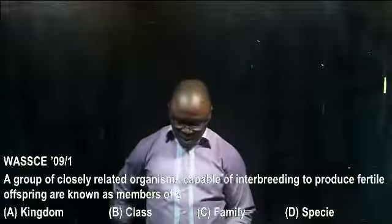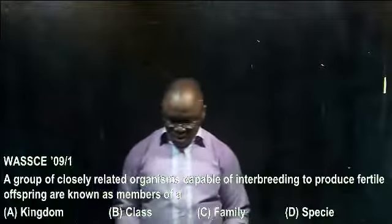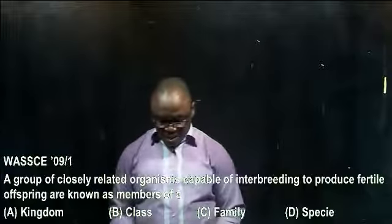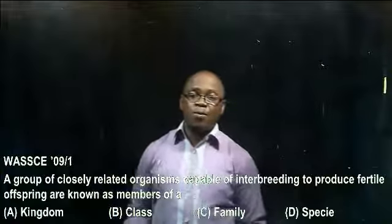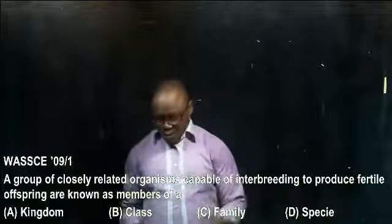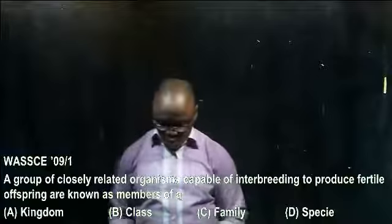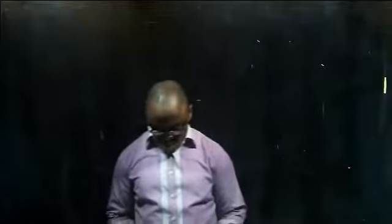This question was extracted from the West Africa Examination School Certificate past question 2009, number one. It reads: a group of closely related organisms capable of interbreeding to produce fertile offspring are known as — the answer is option B. A species is a group of organisms that can freely interbreed to produce fertile offspring.